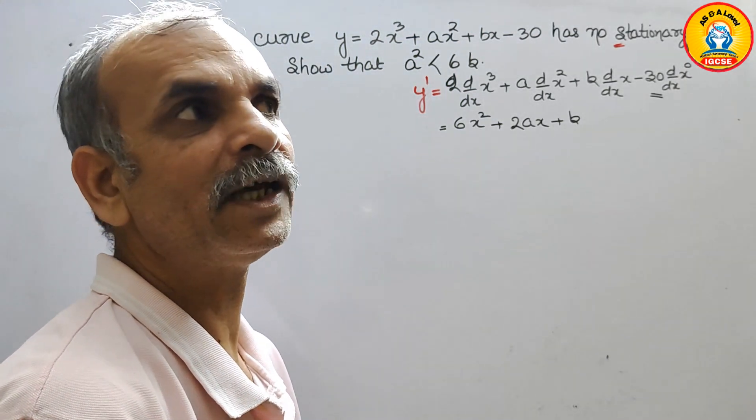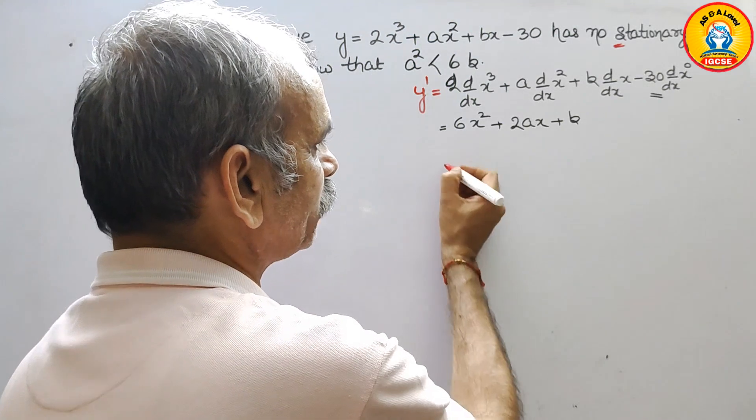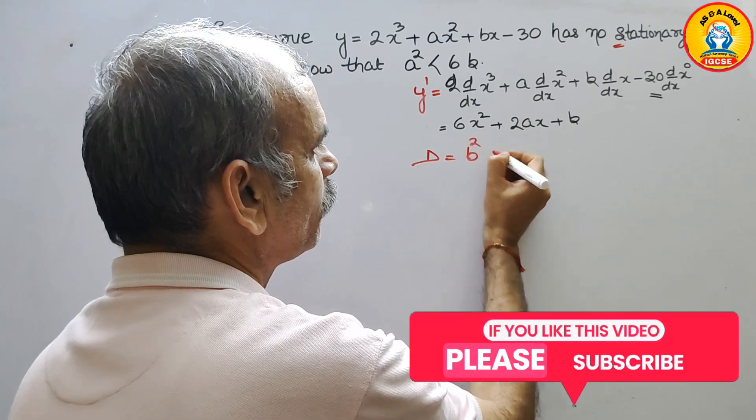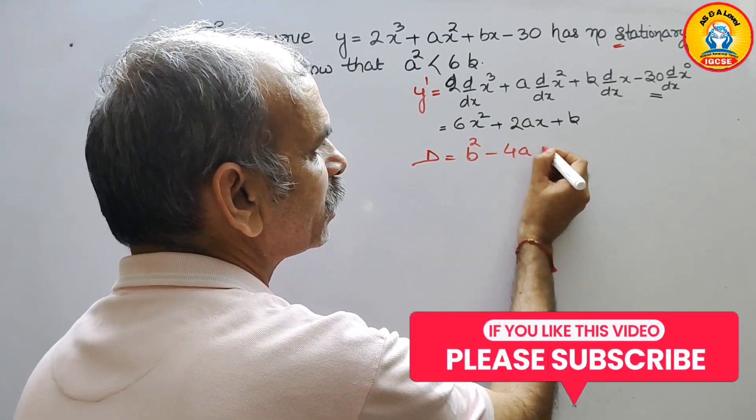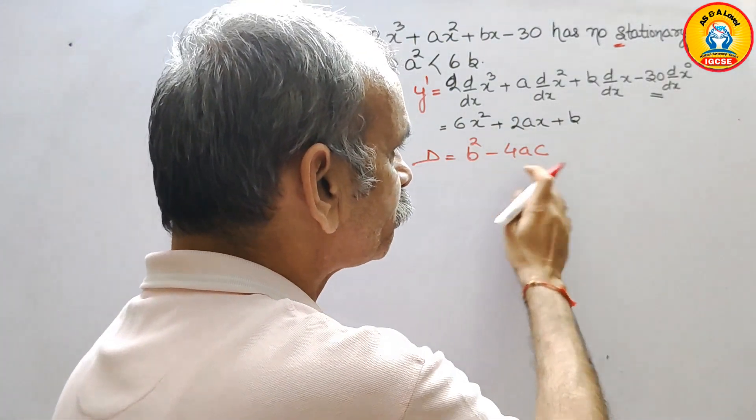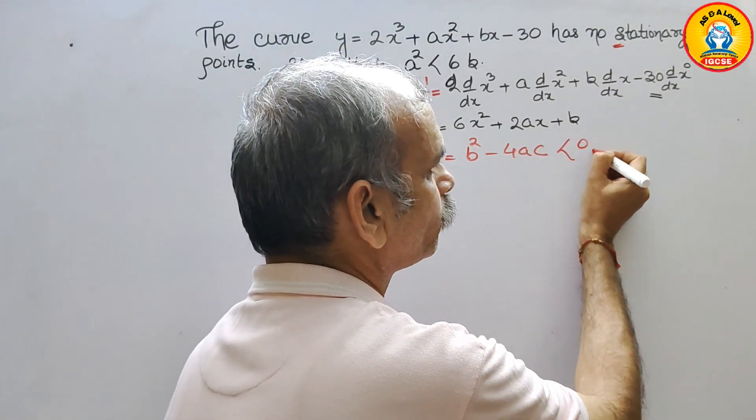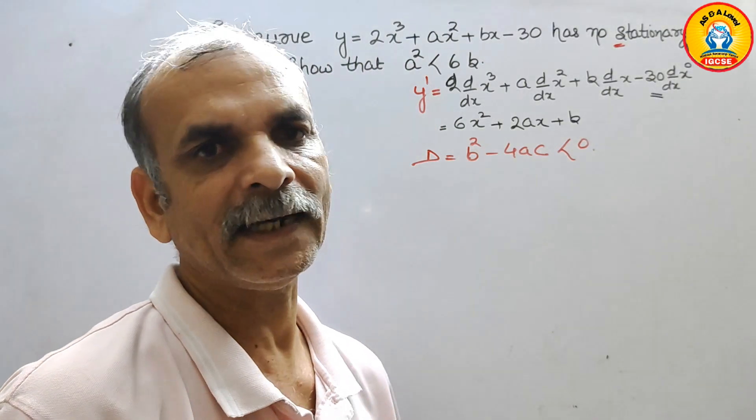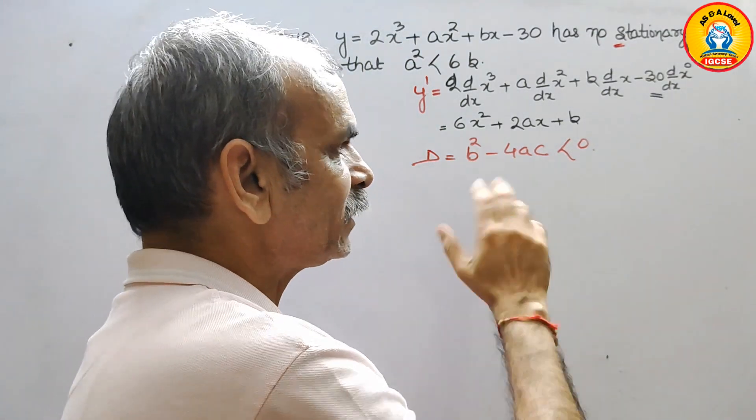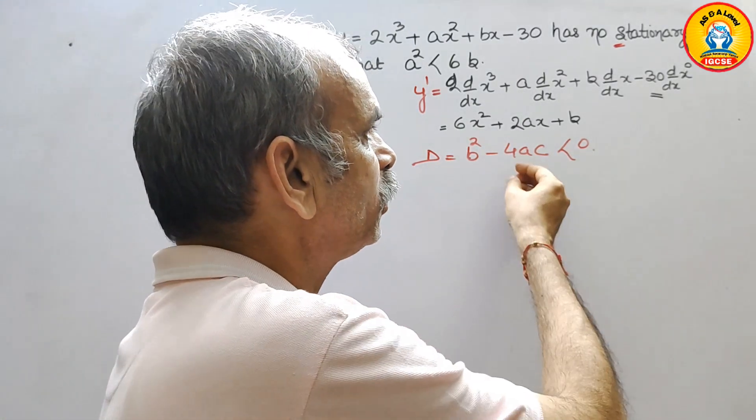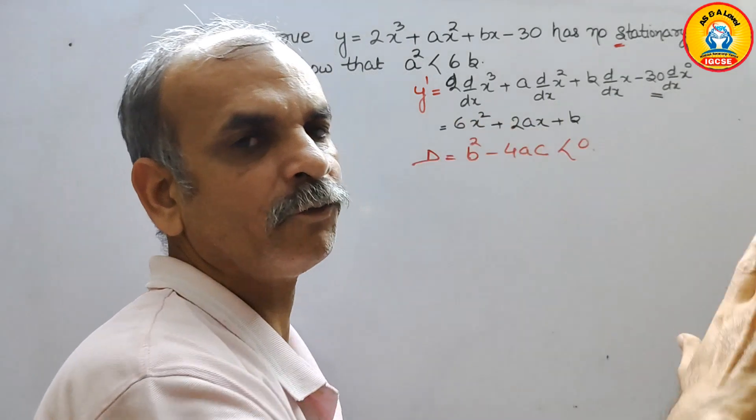It means that if you go for the determinant, we have learned that is nothing but d equals b² minus 4ac. So that means it should be less than 0. We have already learned in algebra that if it is less than 0, we do not have real roots.